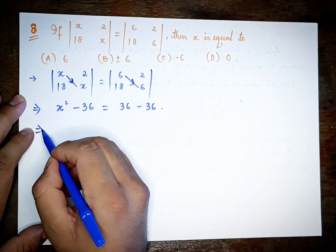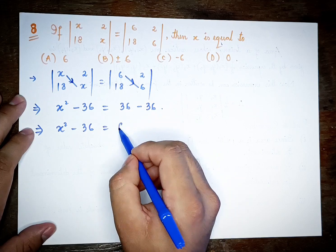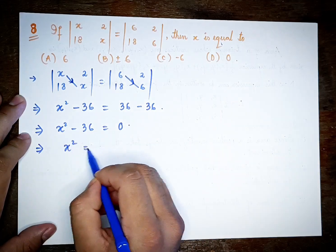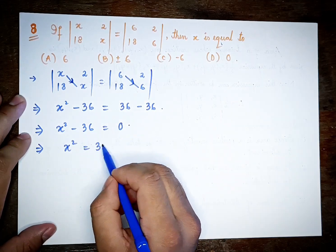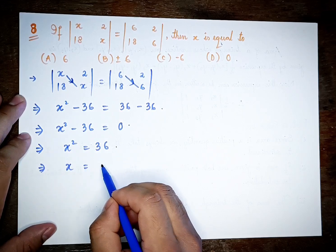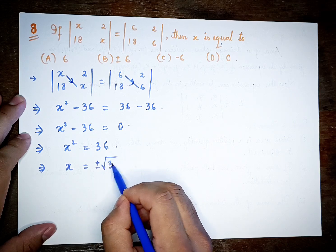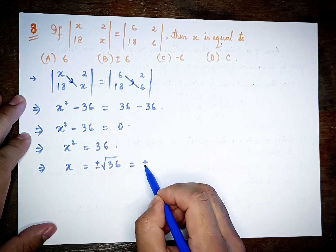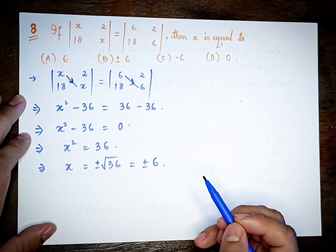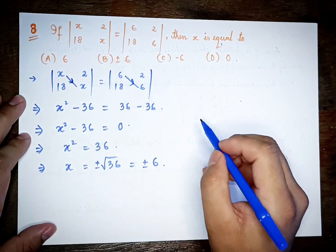This implies x squared minus 36 equals 0, so x squared equals 36, therefore x equals plus or minus the square root of 36, which equals plus or minus 6. The answer is option B.